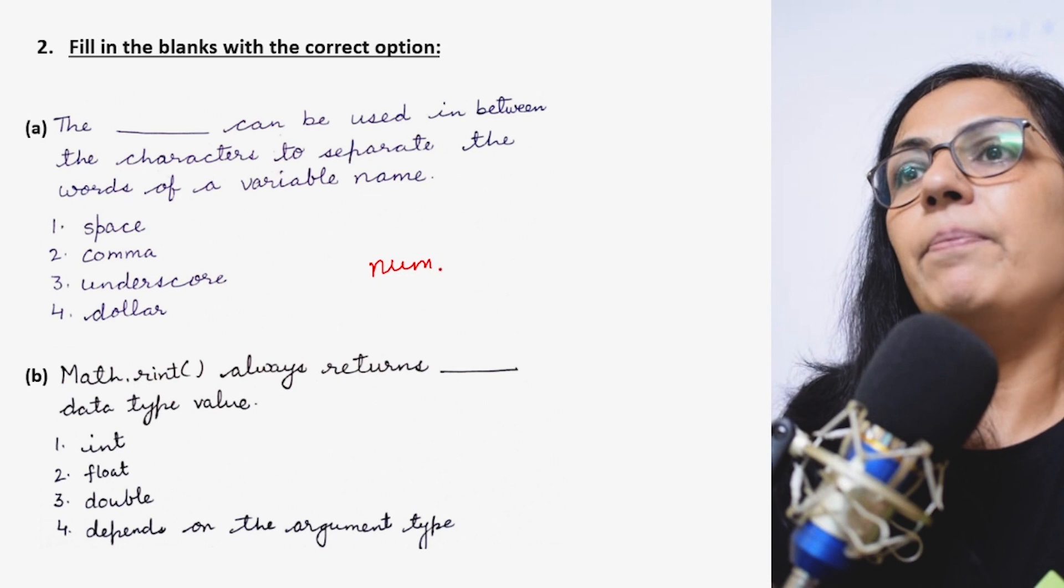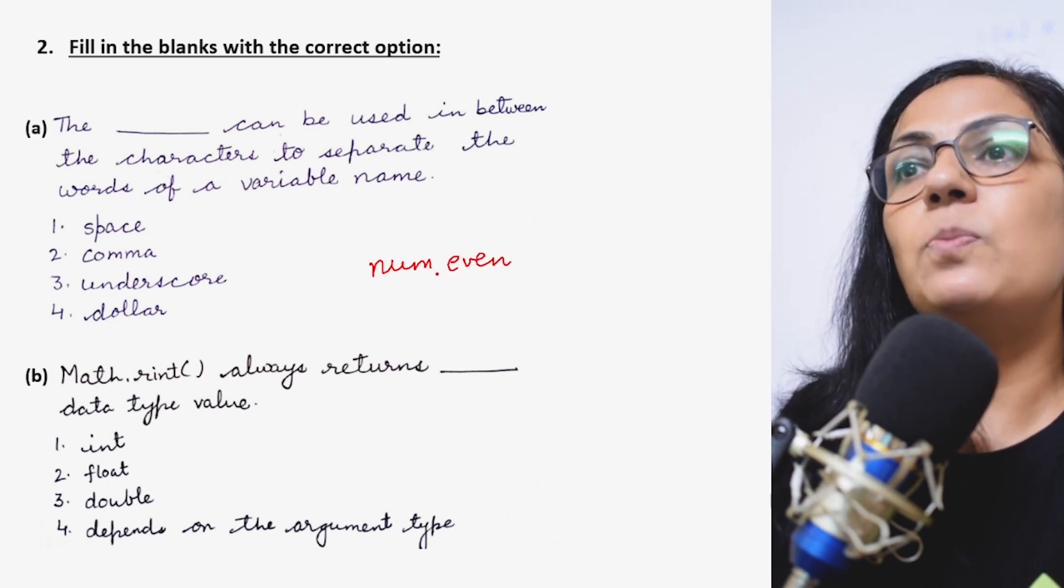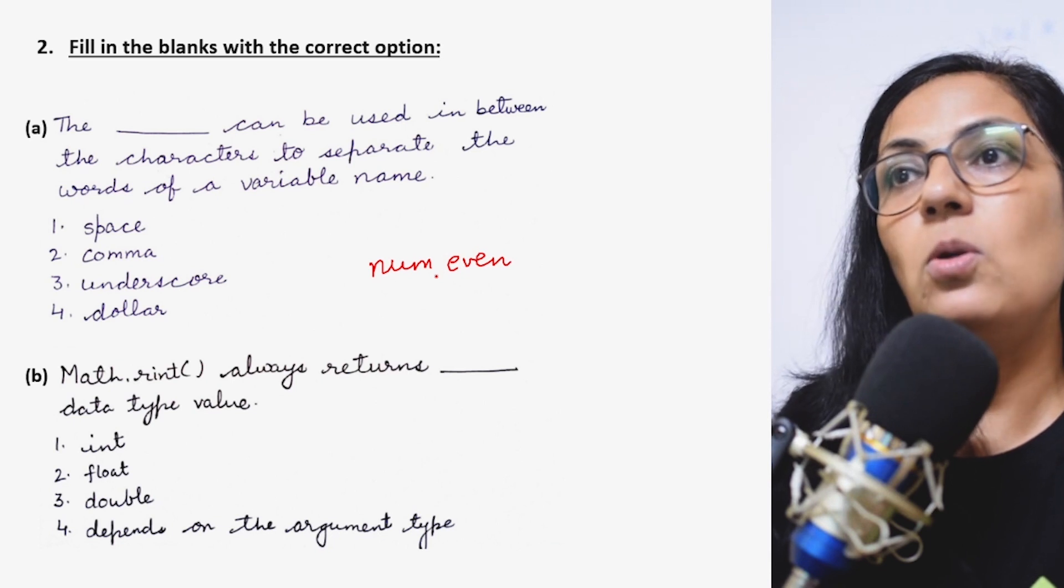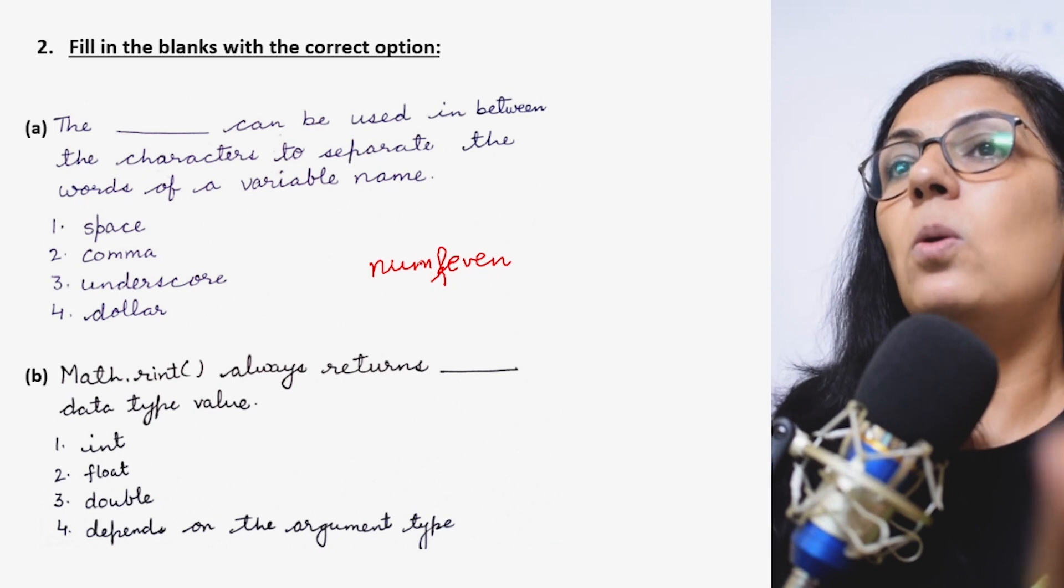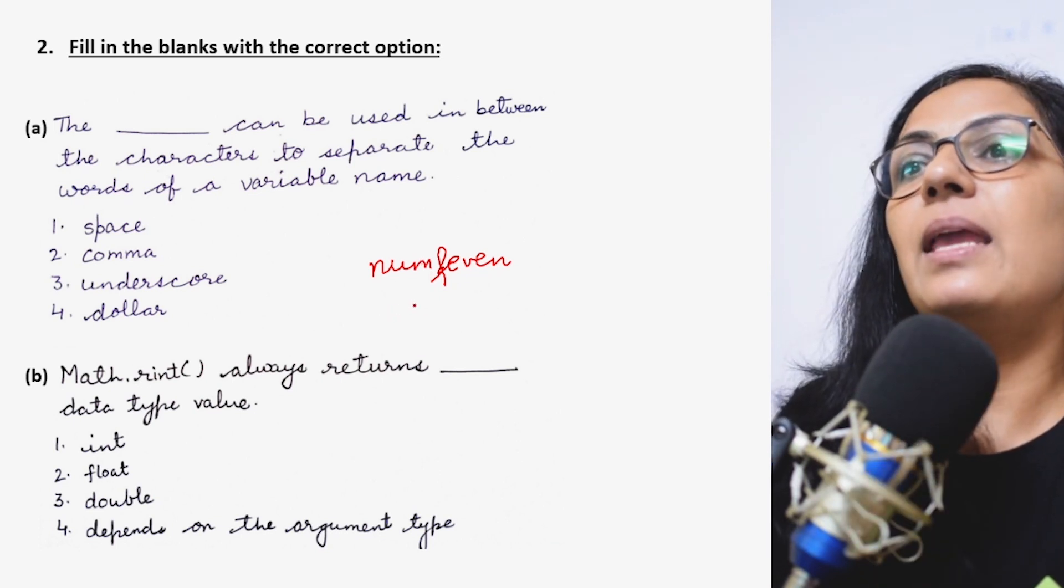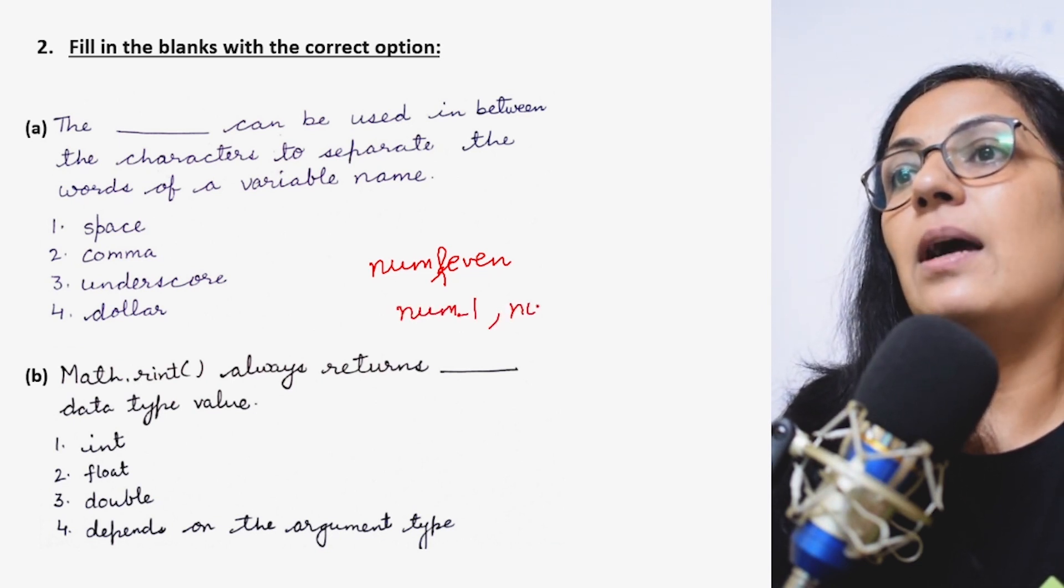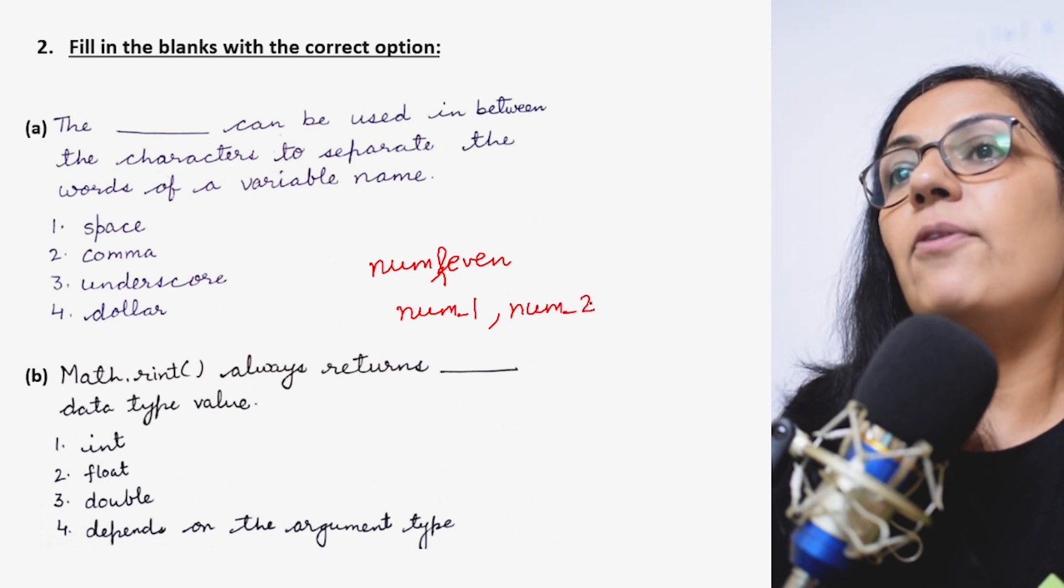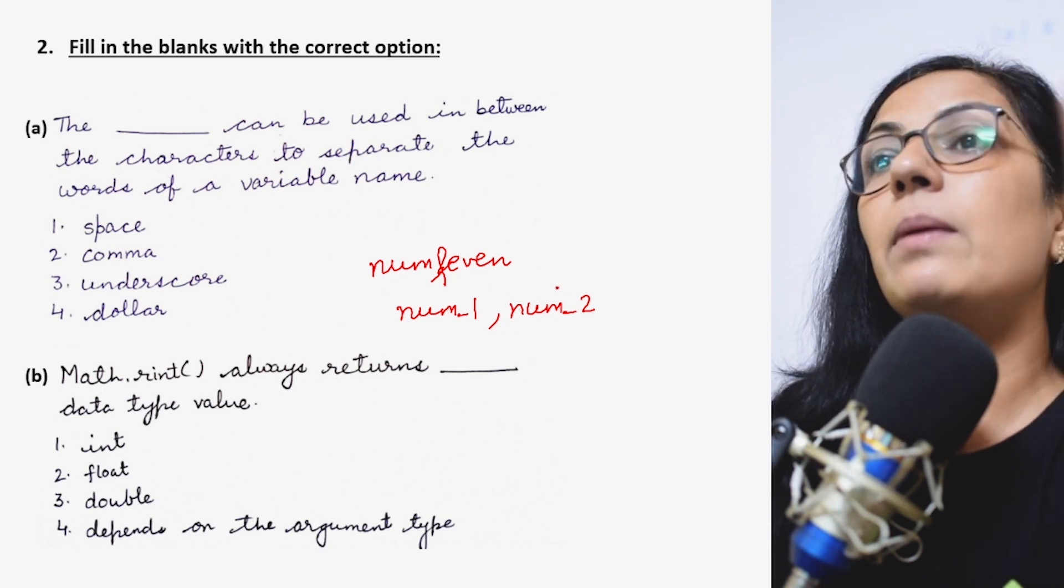Suppose if you want to write num even and if you want to give a space, is that space allowed? No. Even comma is not allowed and at symbol is not allowed. So only the special character which is allowed in variable name is underscore symbol. Say num_1 then you can write num_2 like this.